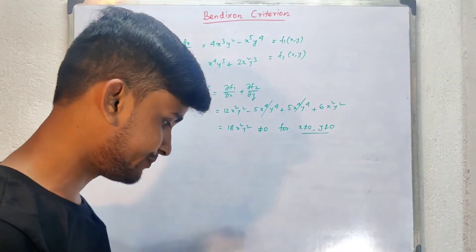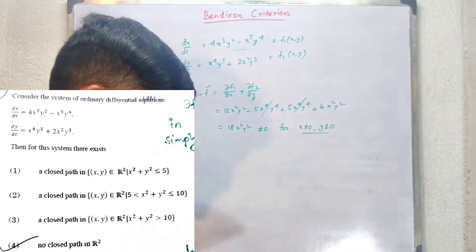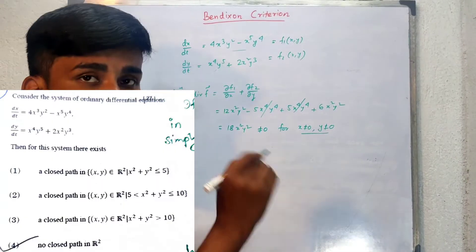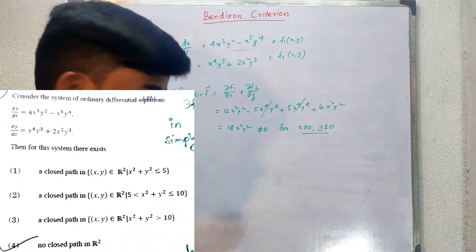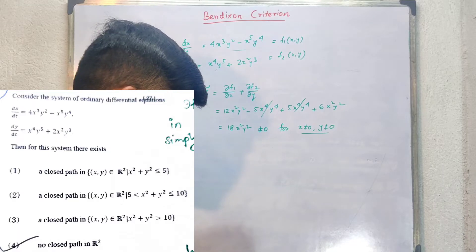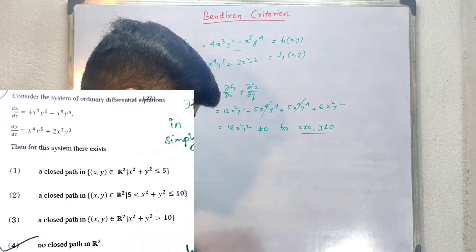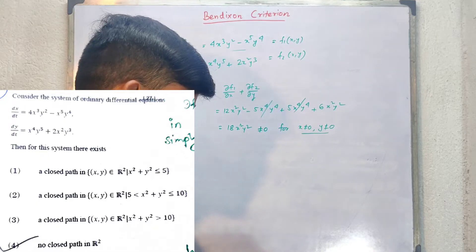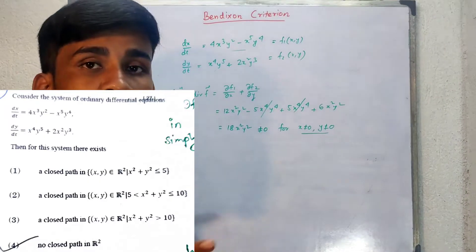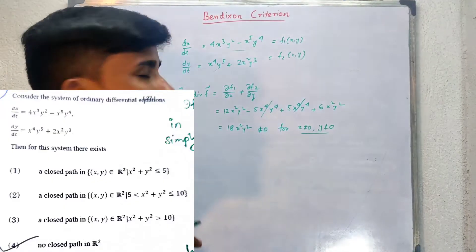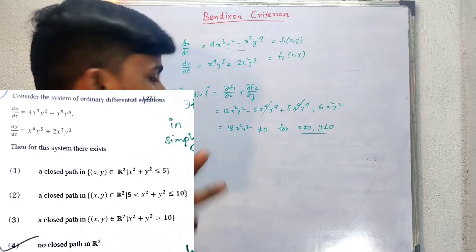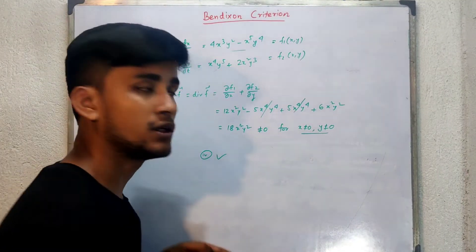There are four options. Option A says a closed path in XY belongs to R². Options B and C also say closed paths in certain regions. Option D says there is no closed path in R². The Bendixson criteria is a sufficient condition for the non-existence of a closed path or closed trajectory. So from the Bendixson criteria, it is obvious that the answer is option D: there is no closed path in R².